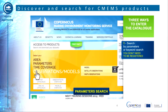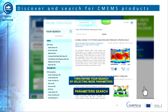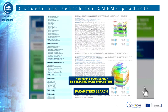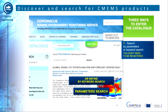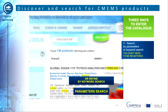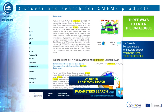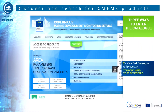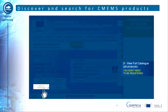The first way is the most intuitive — you can refine your search with more parameters or using a keyword search. The second way shows you the complete catalog organized by geographical areas, numerical models, observations, and parameters. The third way allows you to download the catalog as a PDF file.